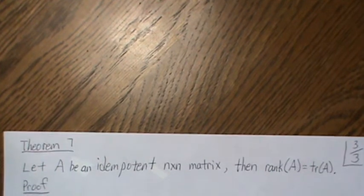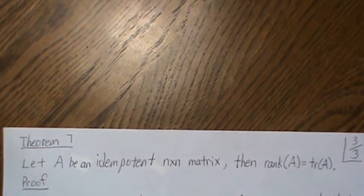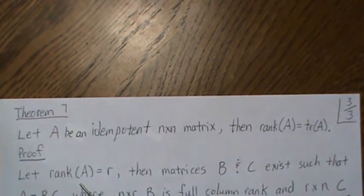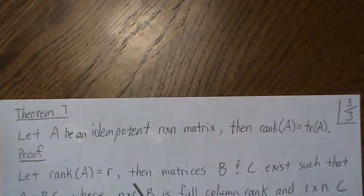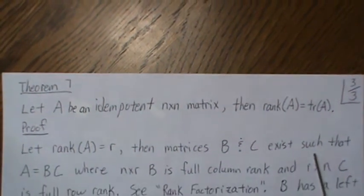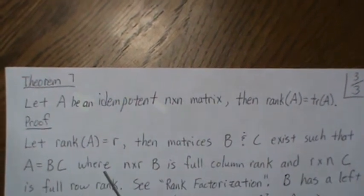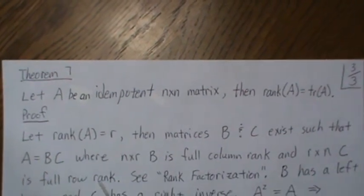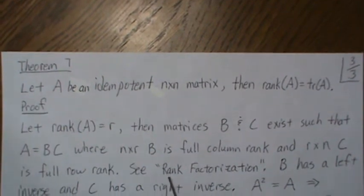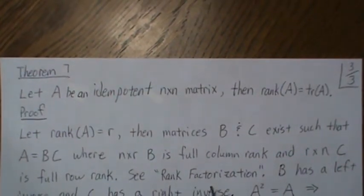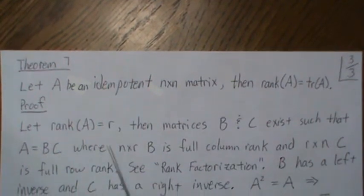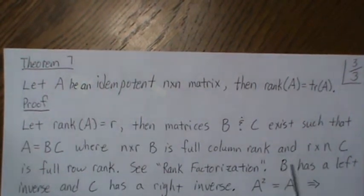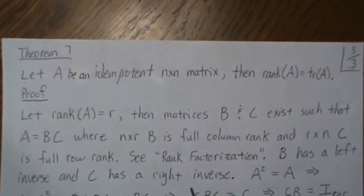Theorem seven: let A be an idempotent N by N matrix. Then the rank of A equals the trace of A. Let the rank of A be R. Then matrices B and C exist such that A equals BC, where the N by R matrix B is full column rank and the R by N matrix C is full row rank — this comes from rank factorization.